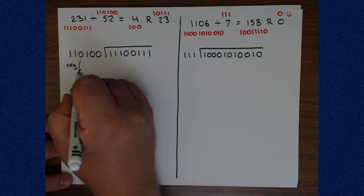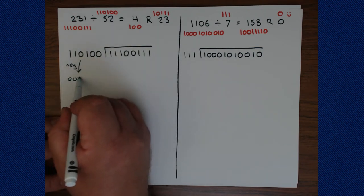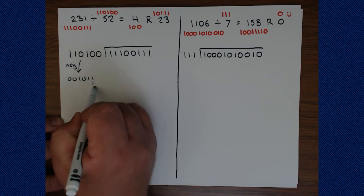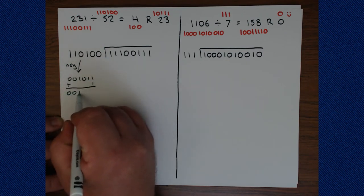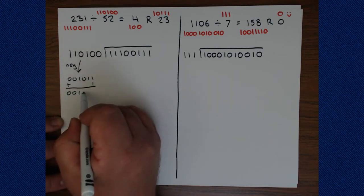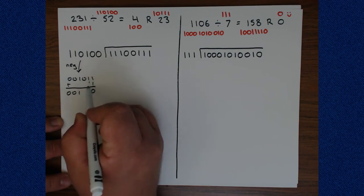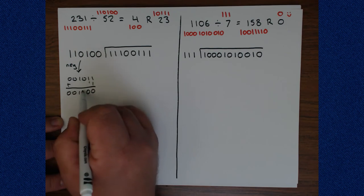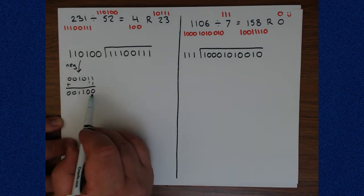We're going to confine that negative string to the same number of bits as the divisor. To do our negation, we need to flip all the bits — 0, 1, 0, 1, 1 — add 1, and we'll get 0, 0, 1, 1, 0, 0. Every time we would traditionally take the partial quotient, multiply it by the divisor, and then subtract, we are now just going to add this.